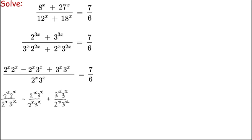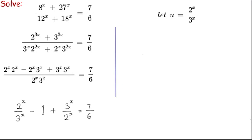Cancelling: 2^x · 2^x over 2^x · 3^x simplifies, the middle term 2^x · 3^x over 2^x · 3^x cancels to 1, and 3^x · 3^x over 2^x · 3^x simplifies. Now let u = 2^x / 3^x. The expression becomes u − 1 + 1/u = 7/6, since 3^x / 2^x is the inversion of u.